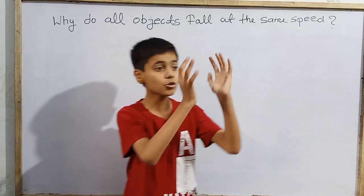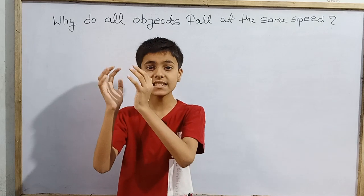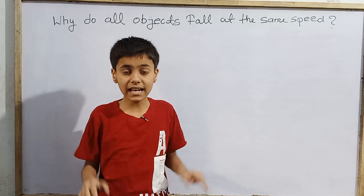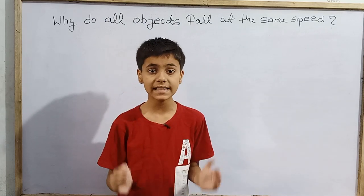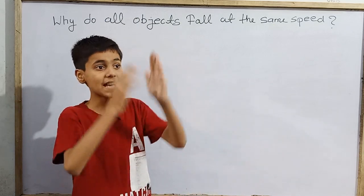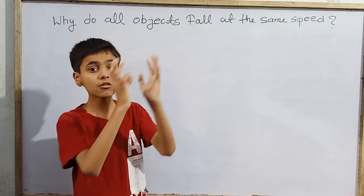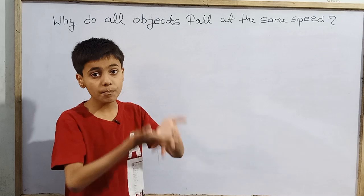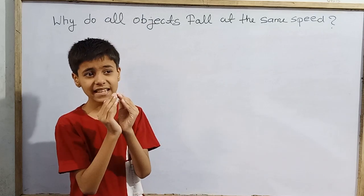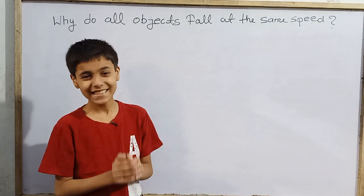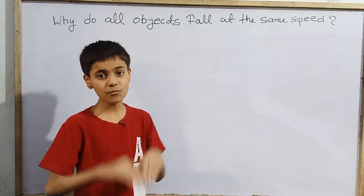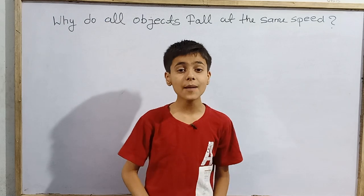If we take a massive object and a light object and drop them, they fall simultaneously from the same height at the same time. Why does this happen? A big, massive object has more attraction towards the earth, so we would expect it to fall first, while the smaller, less massive object has less gravitational attraction, so its speed should be less. Then why do all objects fall simultaneously?